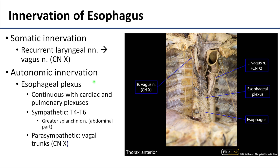There are both sympathetic and parasympathetic contributions. The sympathetics are mostly derived from about T4 to T6, but the more inferior portions of the esophagus are going to have sources from the greater splanchnic thoracic nerve. The parasympathetics are going to be derived from the vagal trunks, from cranial nerve 10.